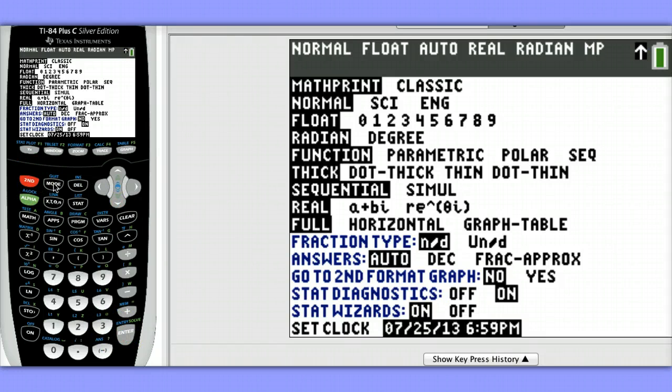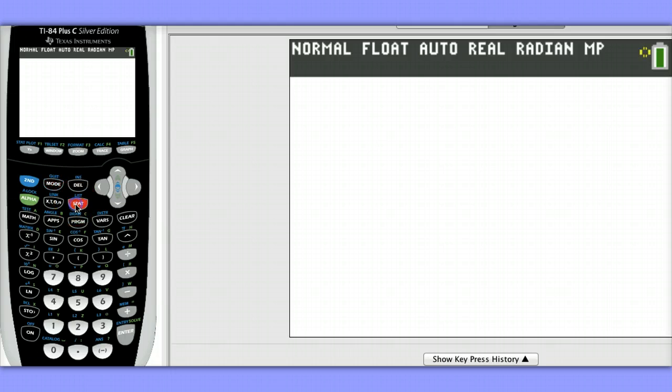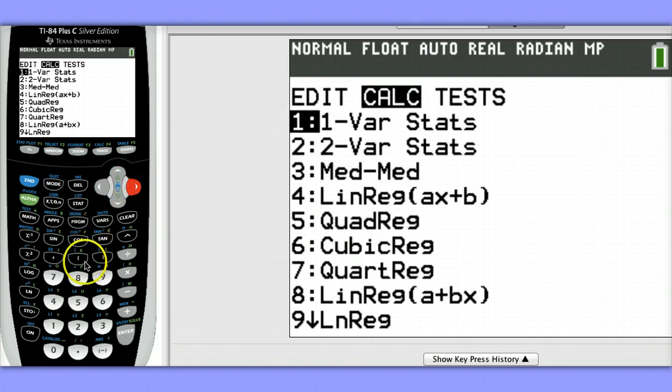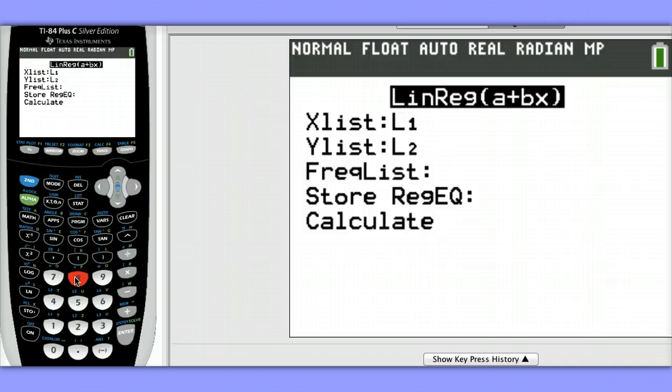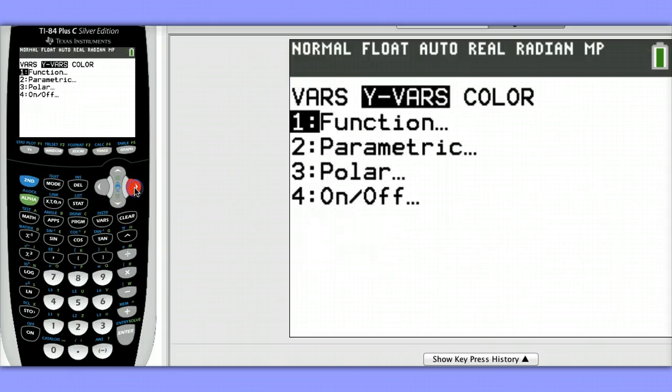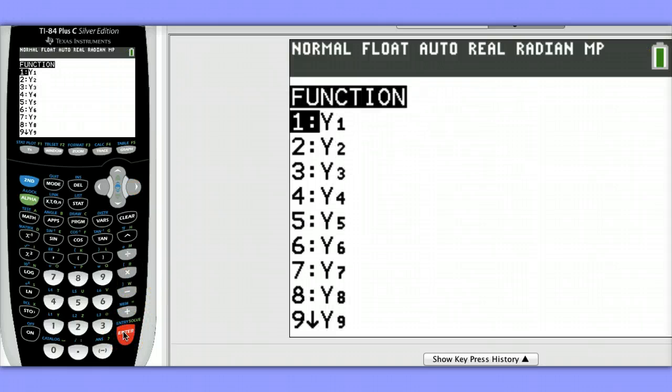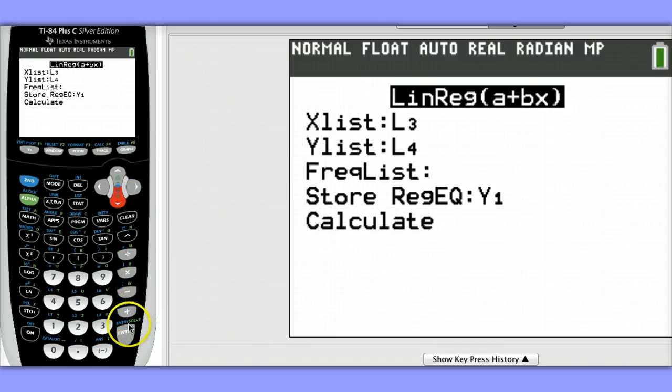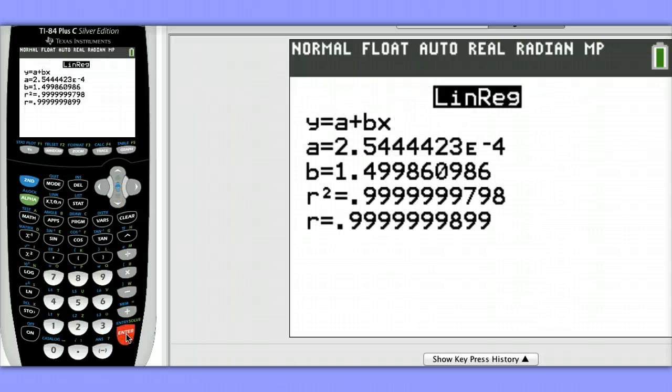Let's do this again. So I can quit to get out of there. Stat, Calc, choosing Option 8, it gives us a template to fill in. I need to change my X list to be List 3, and my Y list to be List 4. Down here, for a regression equation, we're going to hit VARS, YVARS, and store it in Y1. The reason I would store my equation in Y1 is I might want to use that equation to make predictions.